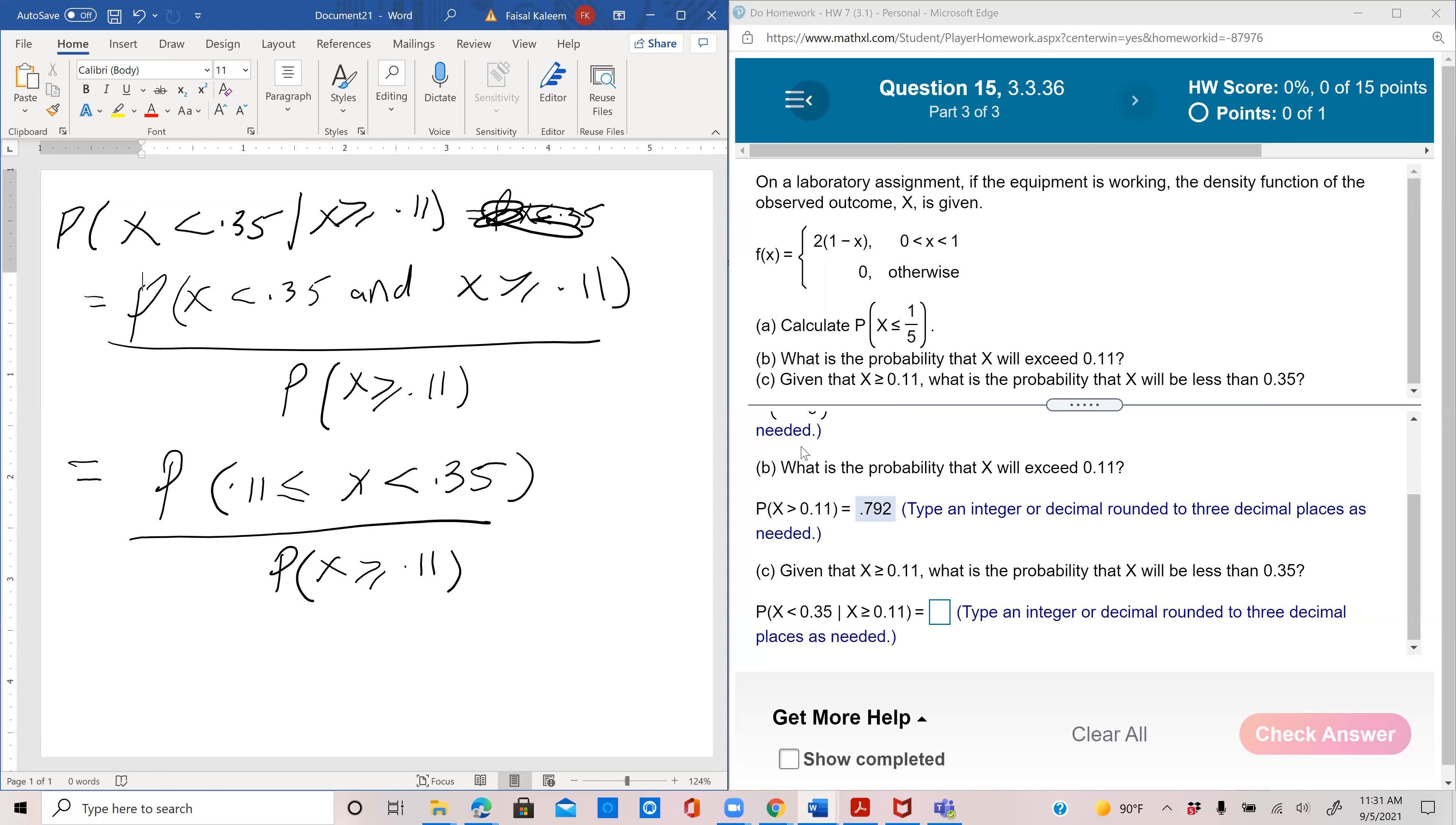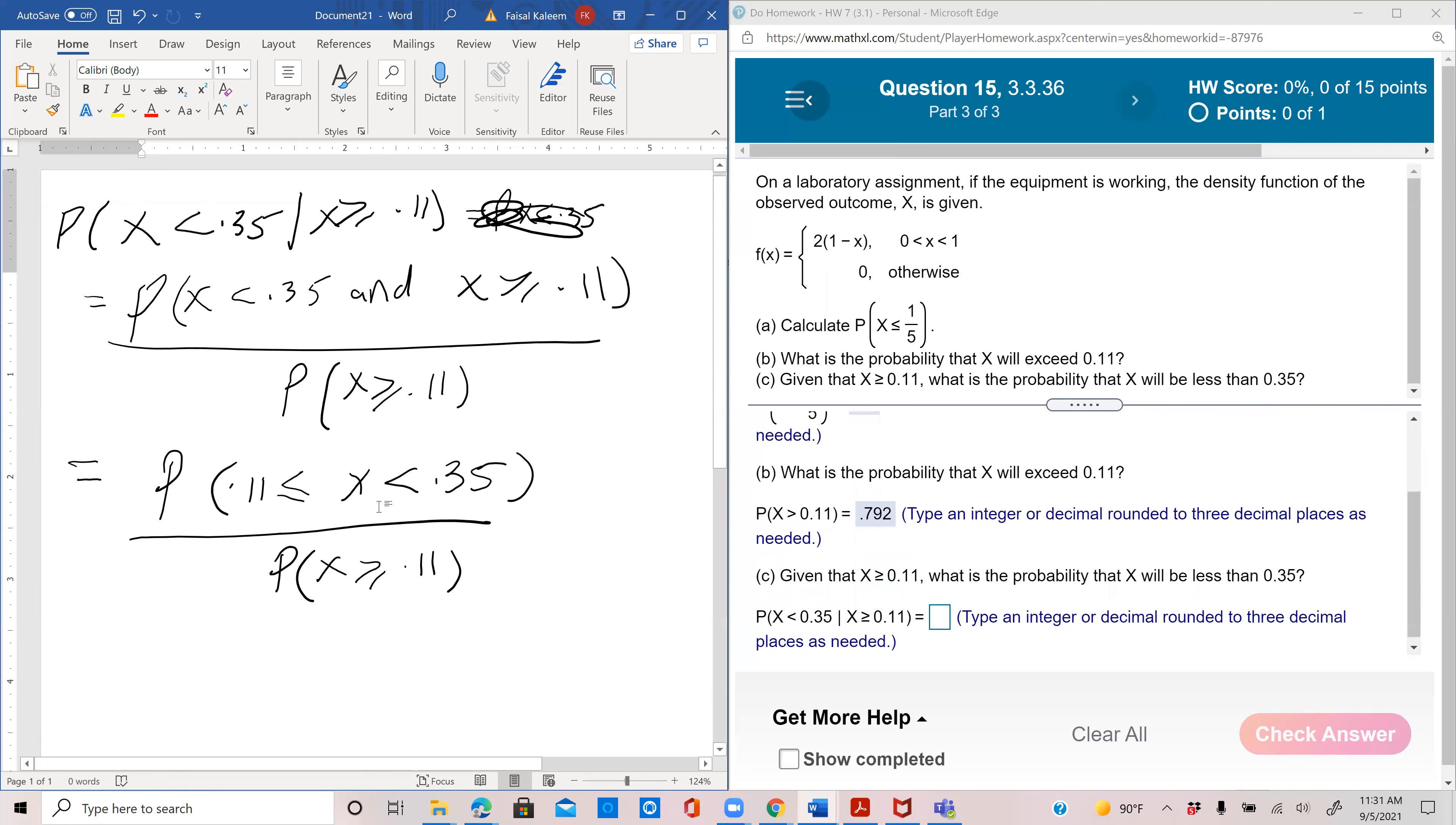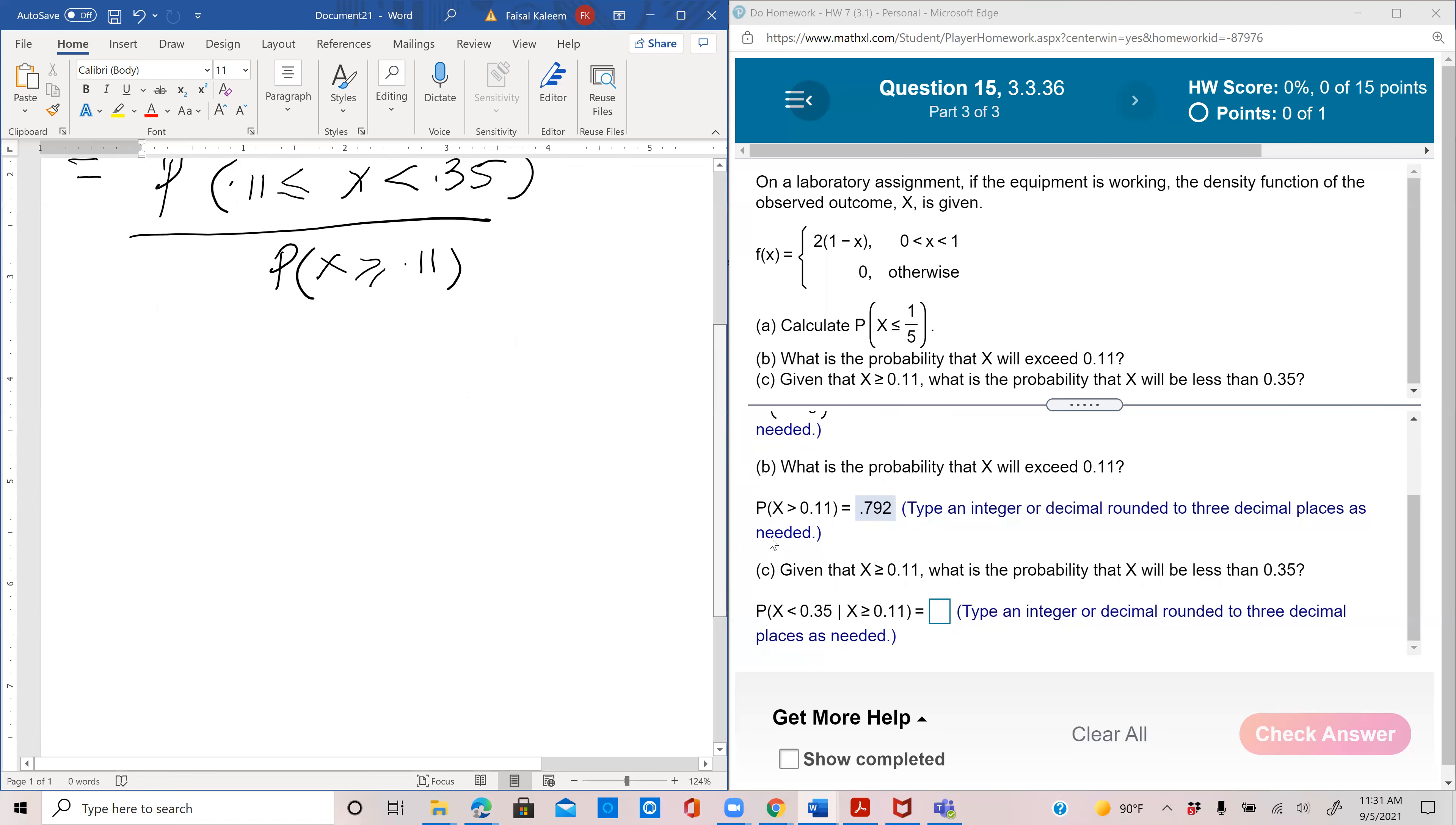So between 0.11 and 0.35 we need to calculate this. Luckily we already have probability x greater than or equal to 0.11, which is the same as x greater than 0.11, that's 0.7921. So let's just calculate the numerator first.